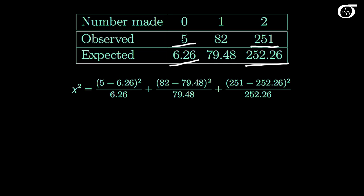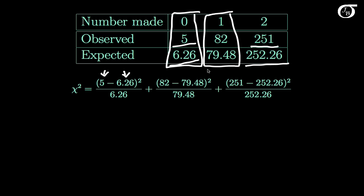We again look at each cell: take the observed count of 5, subtract the expected count of 6.26, square that, and divide by the expected. We do that for the other two cells as well. Carrying out this test statistic, the value is 0.34.